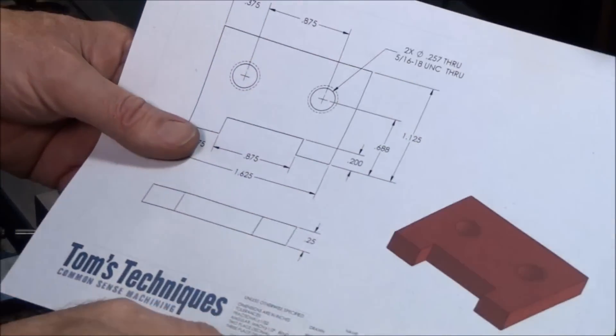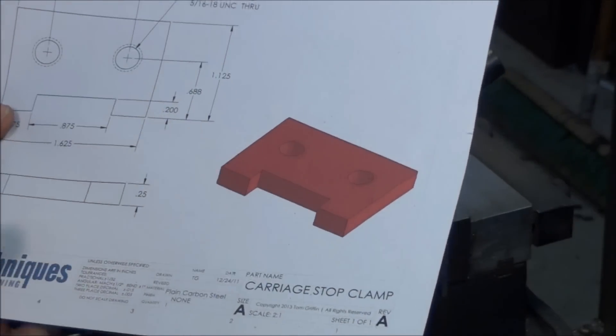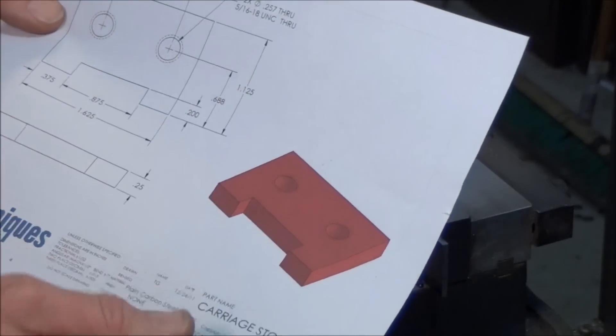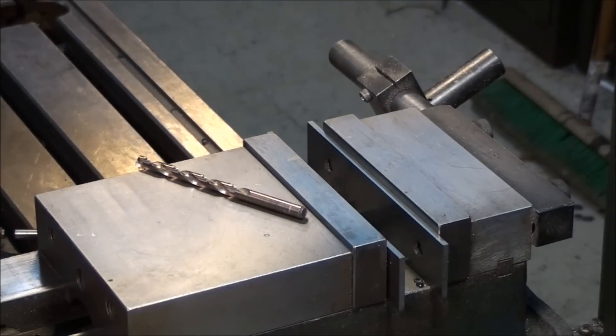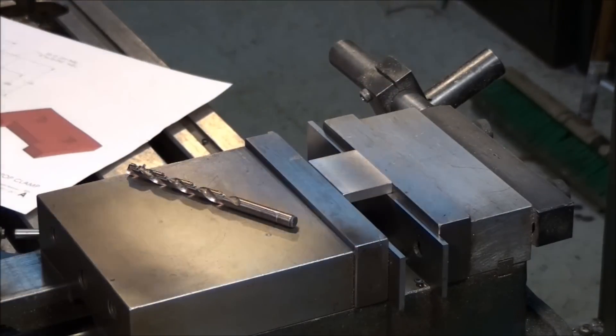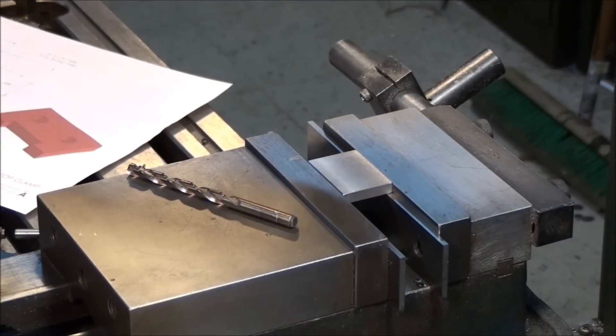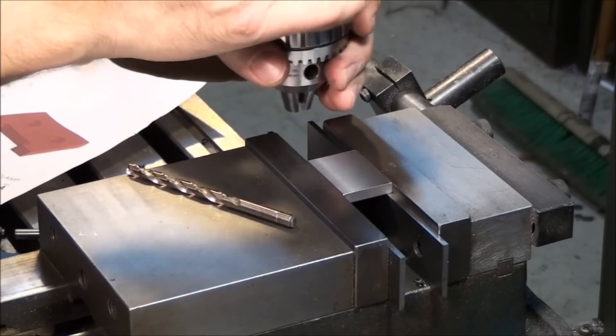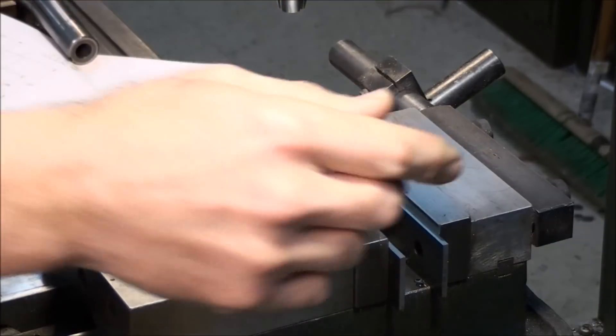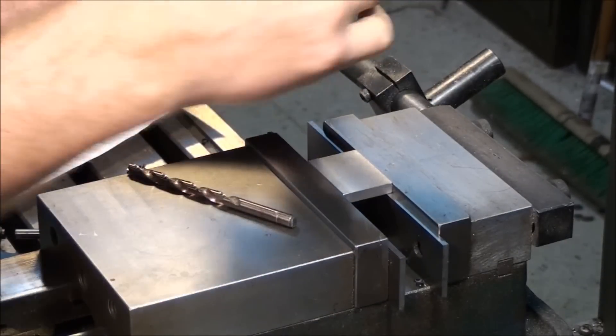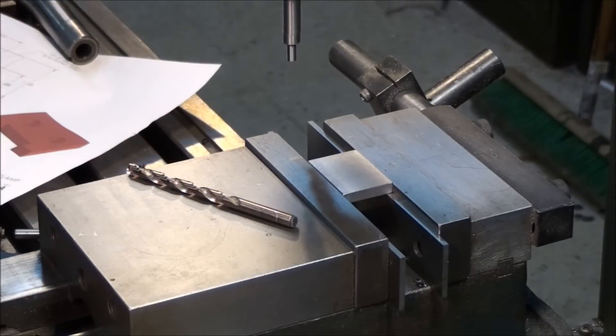Okay, so we need to tap two 5/16-18 holes into this part, 3/8 from one edge and 11/16 from the others. So let's fill the part in here, and I always keep my edge finder right on the edge of the vise within easy reach. So we've got to pick up a couple edges. Let's get it out of back gear, we're not going to need to run it that slow anymore.